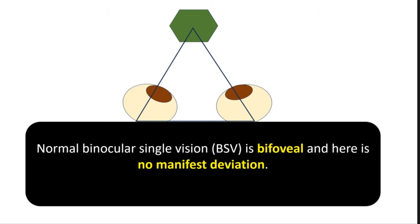Normal binocular single vision, abbreviated as BSV, is basically bifoveal and there is no manifest deviation. The images on both eyes should form on the fovea of the two eyes and there should be no squint present. Only then do we say that a person actually has normal binocular single vision.